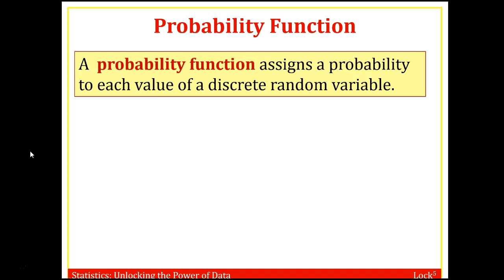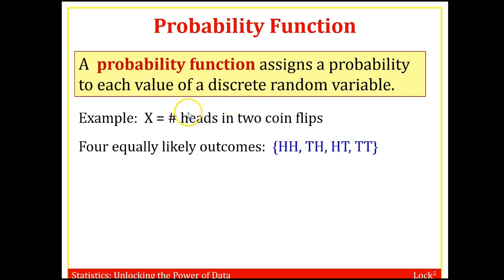Okay, so the probability function is a function that assigns a probability to each value of a discrete random variable. Again, so this could be almost anything. Let's take the example of the number of heads in flipping a coin twice, or flipping two coins. So imagine, you know, a quarter and a dime. You have a quarter and a dime.